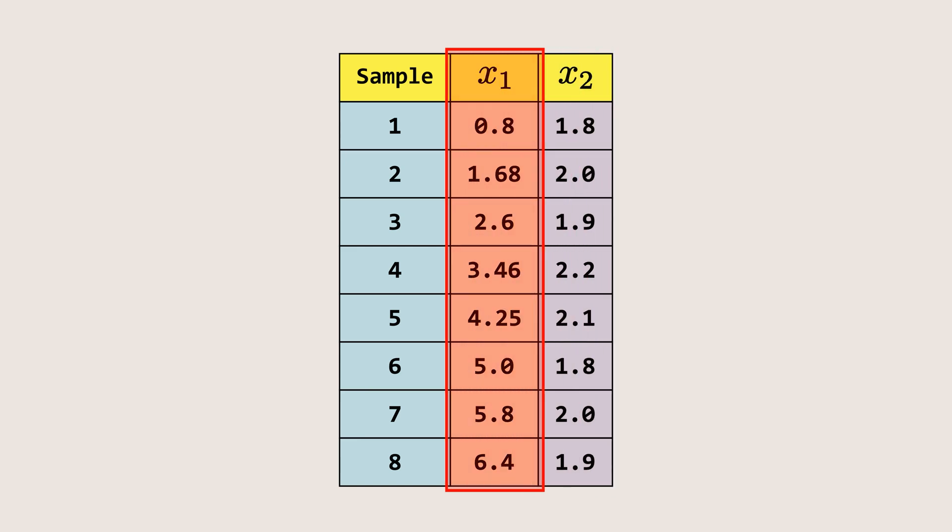On the other hand, the data points along feature X1 vary a lot more, meaning they are spread out. This spread is what we call variance. So, we can say that X1 has higher variance while X2 has a lower variance.